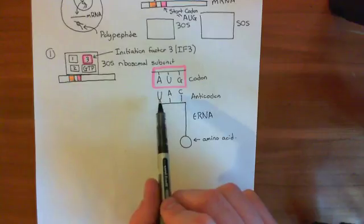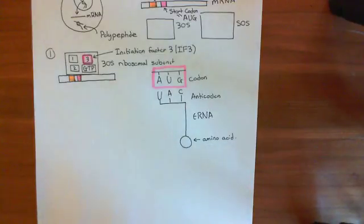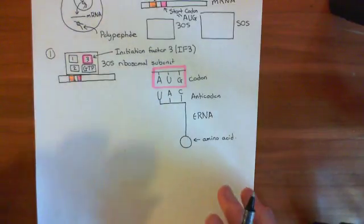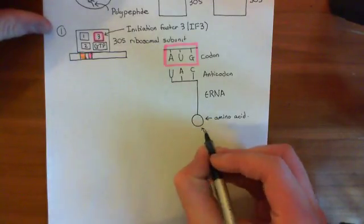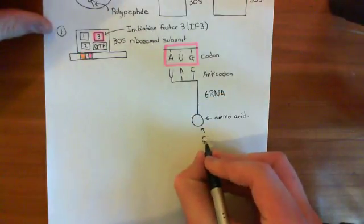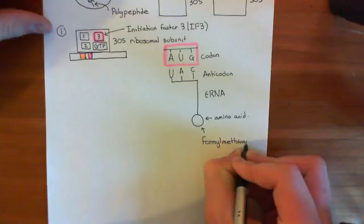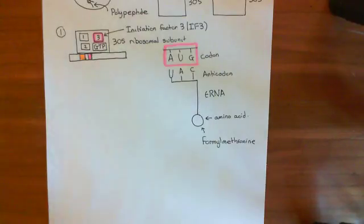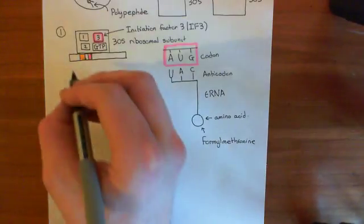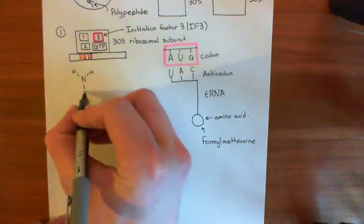The amino acid for this specific UAC anticodon - complementary to the AUG start codon - is formylmethionine. Often formylmethionine is abbreviated to fMet. So this entire thing is called the formylmethionine tRNA, or fMet-tRNA. Let me show you the structure of formylmethionine, starting with methionine, which is an amino acid.